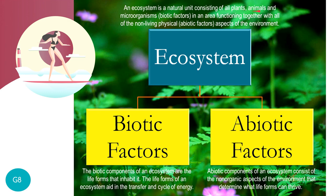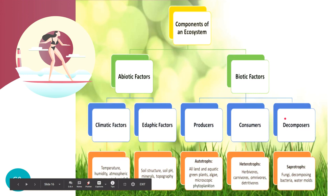We define an ecosystem as a unit consisting of plants, animals, and microscopic organisms — those are your biotic factors — functioning together with the physical, non-living aspects — those are your abiotic factors. So ecosystem equals biotic and abiotic factors.